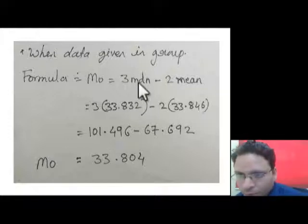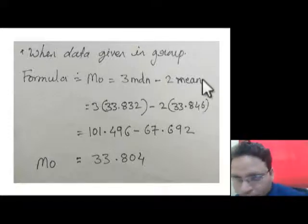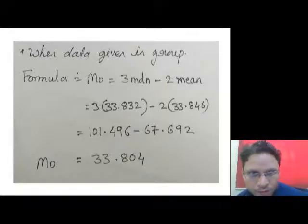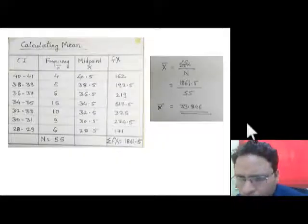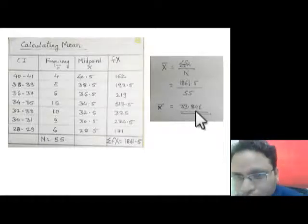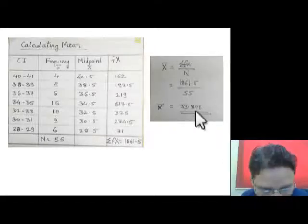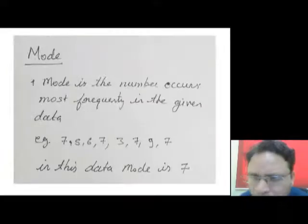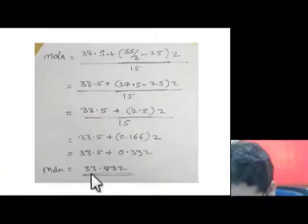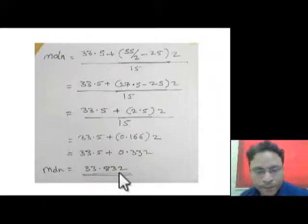Looking at the data we used earlier, when we calculated mean we got a value of 33.846, and when we calculated median we got a value of 33.832. Now using these values of mean and median, we can calculate the mode.